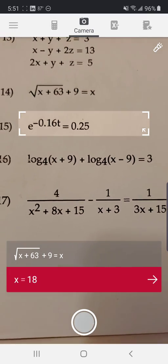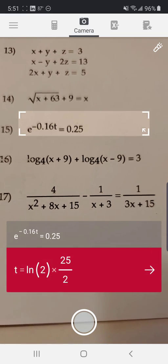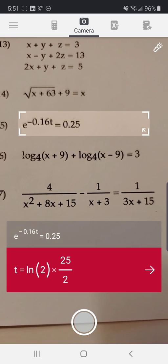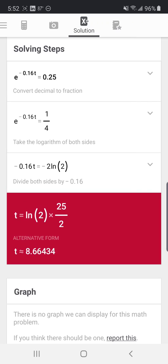Alright, next, how about an exponential equation? Again notice that Photomath gives the exact value. But if I want a decimal approximation, I can get that too. See, down here in the red box, it's going to give me the approximate value for t.